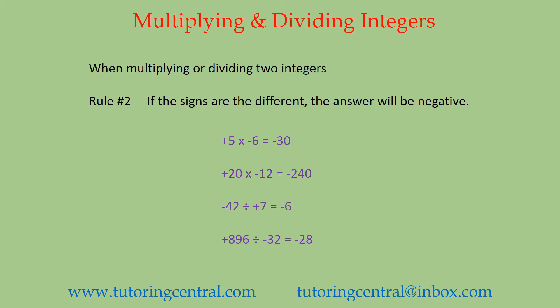Here's rule number two: if the signs are different, the answer will be negative. For example, positive 5 times negative 6 equals negative 30. Positive 20 times negative 12 equals negative 240. Negative 42 divided by positive 7 equals negative 6. And positive 896 divided by negative 32 equals negative 28. It doesn't matter what order the signs are in — whether the positive comes first or the negative comes first — your answer will always be negative when multiplying or dividing two integers with different signs.